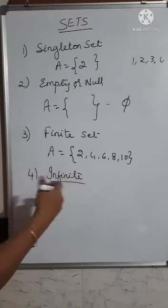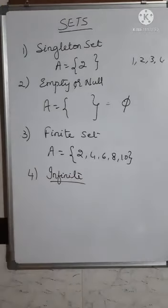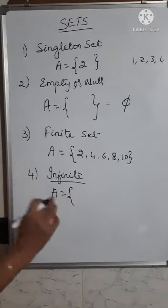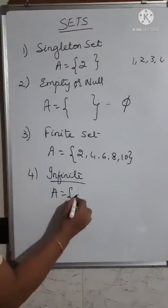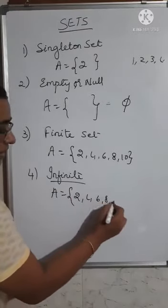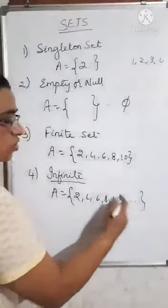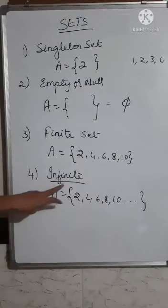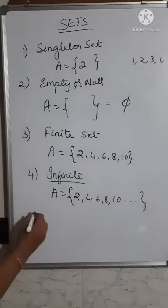The fourth type is an infinite set. With an infinite set, you can have an uncountable number of elements. For example, the set of even numbers: 2, 4, 6, 8, 10 — the numbers go on and on. You can write an infinite number of even numbers, so such a set is called an infinite set.